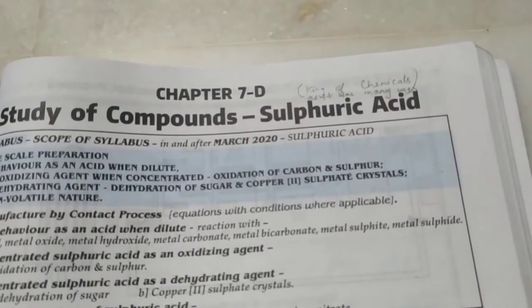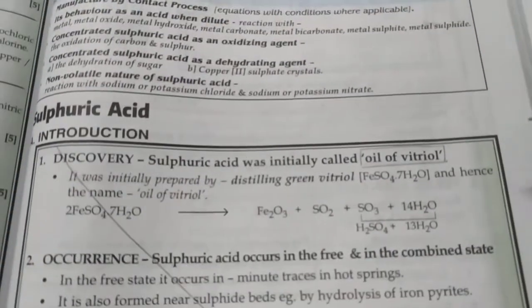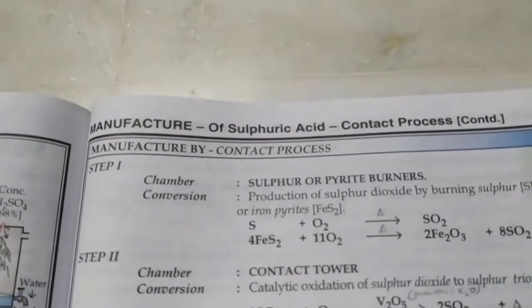Let's study 10th standard ICSE chemistry chapter 7: sulfuric acid. It's called the king of chemicals because of its myriad uses, which we shall study in this chapter. Earlier it was called oil of vitriol. Let's study how it is manufactured.